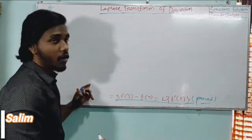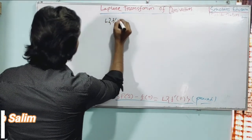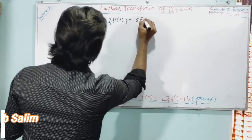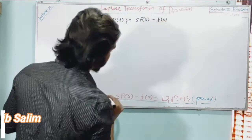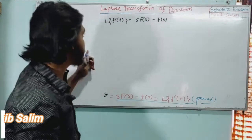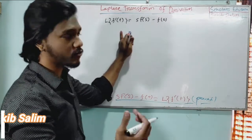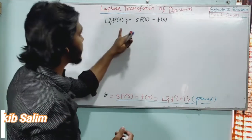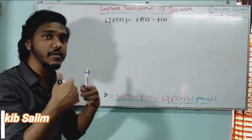We have already proved that the Laplace Transform of f prime of t equals s·F(s) minus f(0), which we have proved. Now we have replaced f(t) to extend this result.